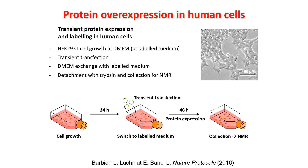There is another tutorial that will show you how we grow the cells and perform the transient transfection. I will quickly summarize these steps and then show you how we collect the cells and prepare the actual NMR samples. The transient protein expression protocol consists of a cell growth phase where we first grow the cells, then after 24 hours perform a transient transfection with the DNA. At the same time we switch from unlabeled to labeled medium. Protein expression goes on for about two to three days, and we have observed the highest expression levels after two or three days. At that point we collect the cells for NMR.